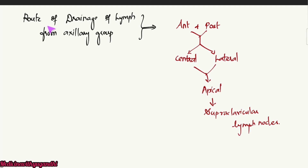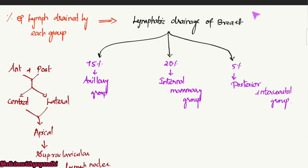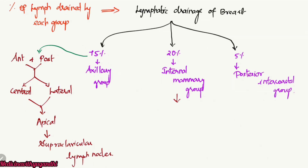The route of drainage from the axillary group: lymph from the breast first passes to the anterior and posterior group of lymph nodes, then from there to the central and lateral, then to the apical, and finally into the subclavicular group of lymph nodes. The internal mammary group of lymph nodes drains not only the inner half but also the outer half of the breast.